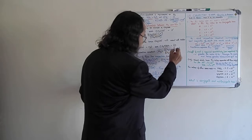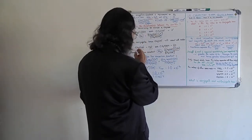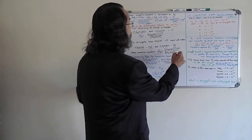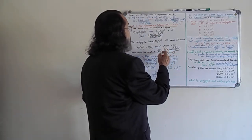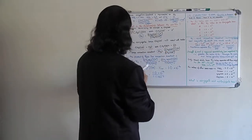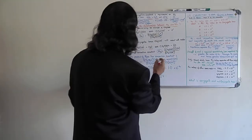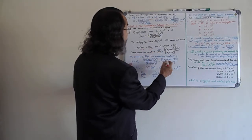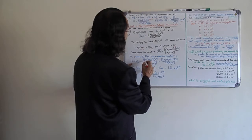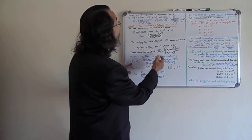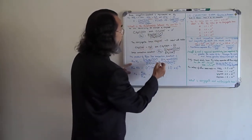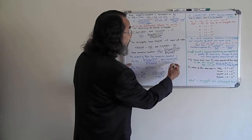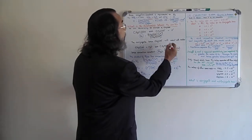For this base ionization, Kb equals the conjugate acid concentration multiplied by the conjugate base concentration, divided by the conjugate base concentration of CH₃COO⁻. Water is in large excess and is neglected. Substituting: Ka equals CH₃COO⁻ times H⁺ divided by CH₃COOH, and Kb equals CH₃COOH times OH⁻ divided by CH₃COO⁻. Multiplying Ka × Kb, the common terms CH₃COO⁻ and CH₃COOH cancel out.